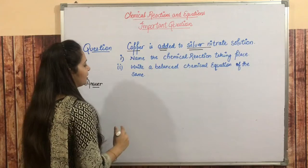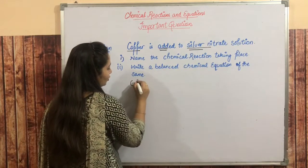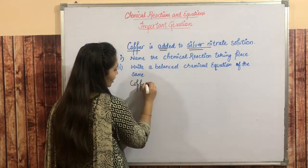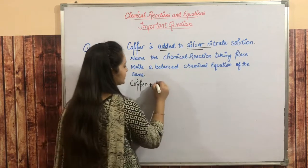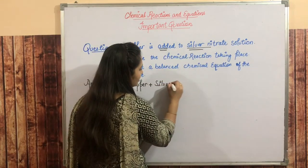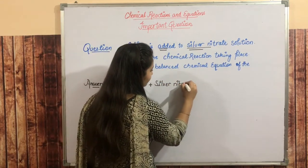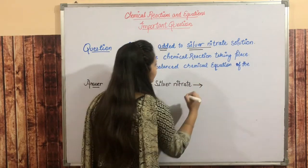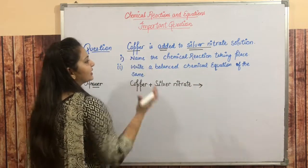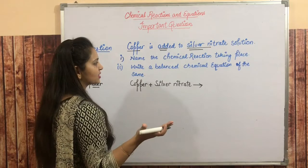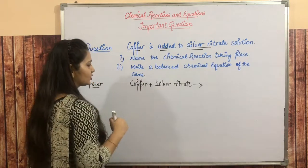So they have given us that copper is being added to silver nitrate. We need to tell which reaction is happening and write the whole chemical equation also.